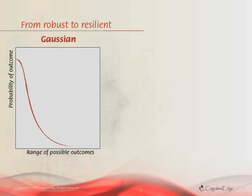One of the major changes in strategy at both a corporate and government level is a switch from a focus on robustness — trying to prevent failure — to one based on resilience, which is all about early detection and fast recovery.